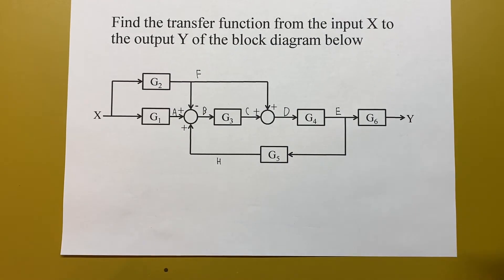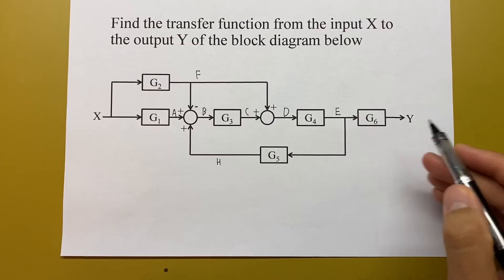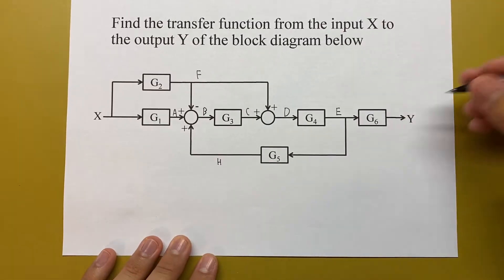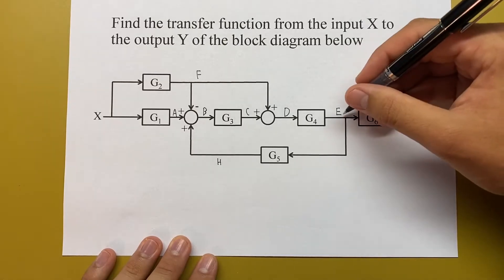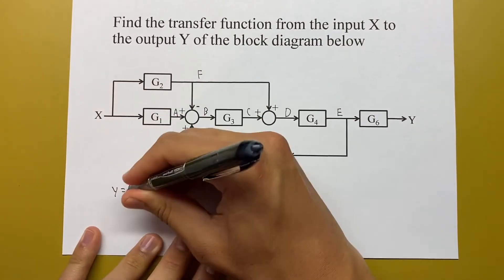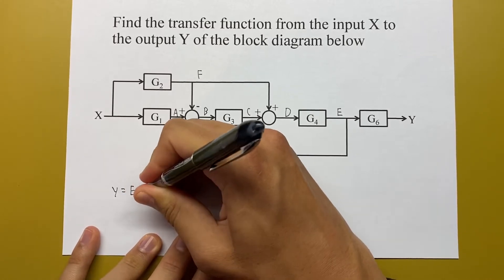Now that we've got all our signals labeled, I'm going to start writing equations for what each of them are, working from the end to the beginning. First I'll start with Y. Y is the signal E times G6, so Y equals E G6.